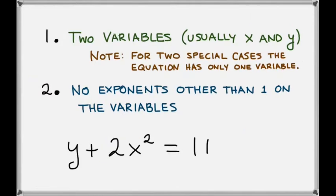How about this one? We have y plus 2x squared equals 11. For the first condition, we still have two variables, y and x. So this equation does satisfy the first condition.